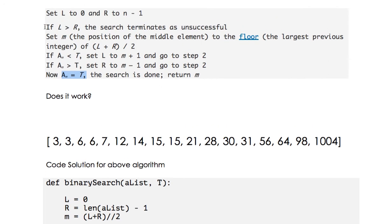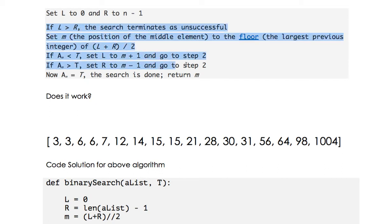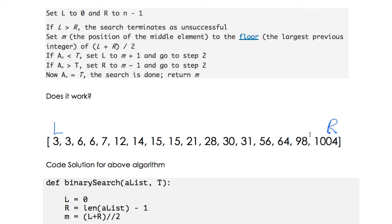So what was this about making it unsuccessful? When we have the list, you remember that we started with L and R here, and then we moved R down here and we moved L up here, and so on. Imagine I was looking for a value that didn't exist in the list.